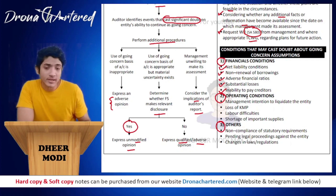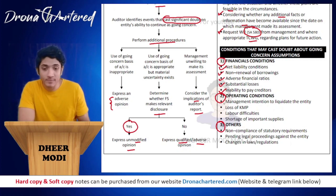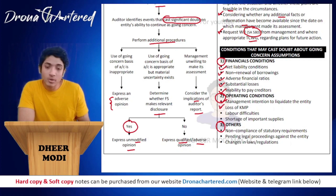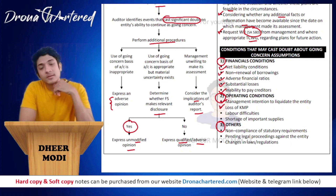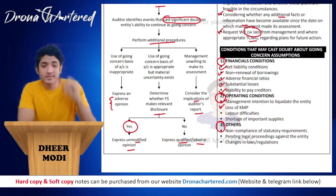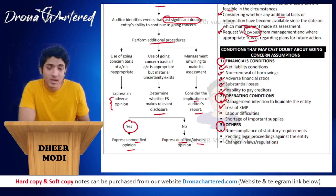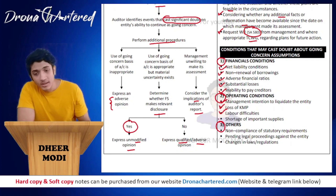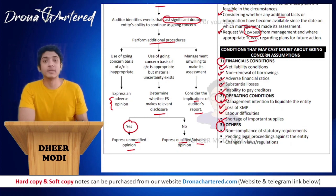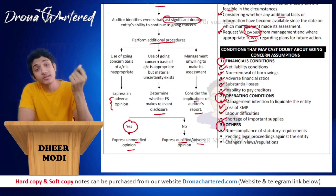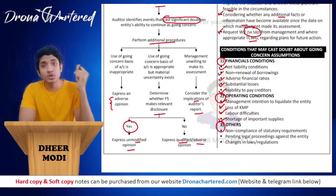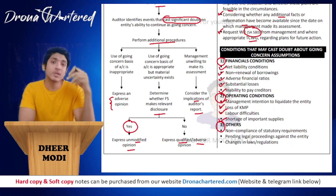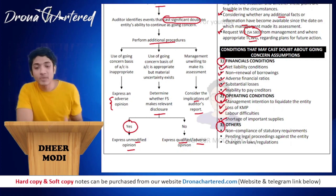Operating conditions include management's intention to liquidate the entity — if the management has plans to liquidate, the going concern basis will be affected. Next is loss of KMP, that is key managerial persons — losing your KMP might cast doubt on the going concern basis. Labour difficulties such as labour strikes and strong labour unions also apply. Next is shortage of import and supply — if a particular raw material is in short supply, the entity will struggle to produce and sell goods and survive.